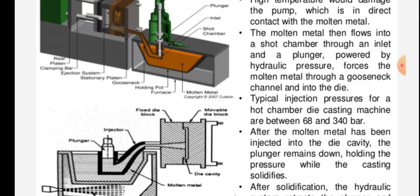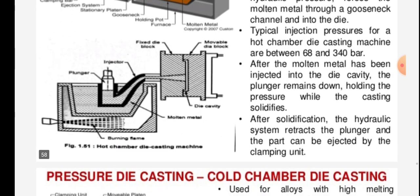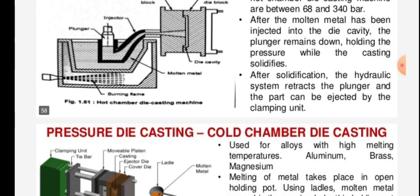After the molten metal has been injected into the die cavity, the plunger remains down holding the pressure while the casting solidifies. After solidification, the hydraulic system retracts the plunger and the part can be ejected by the clamping unit. Casting machine pressure is between 68 to 340 bar.